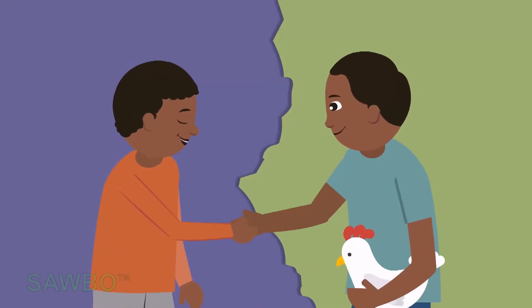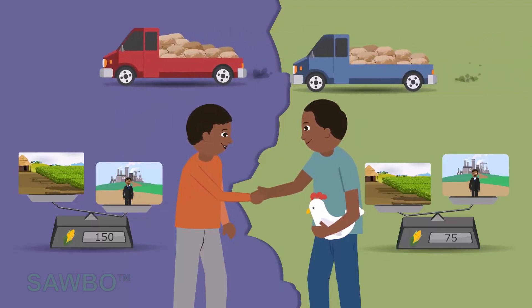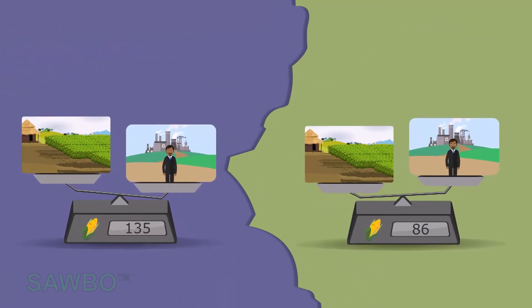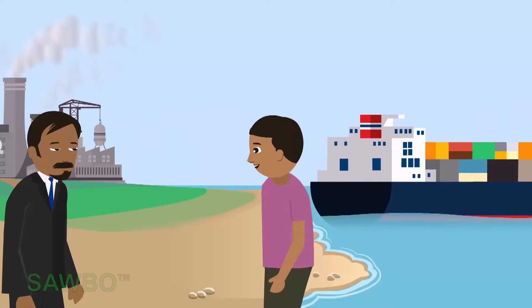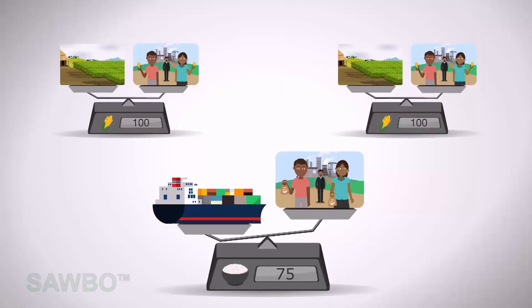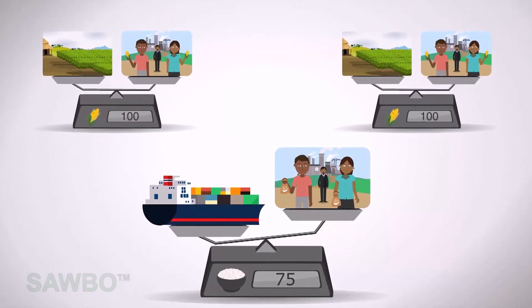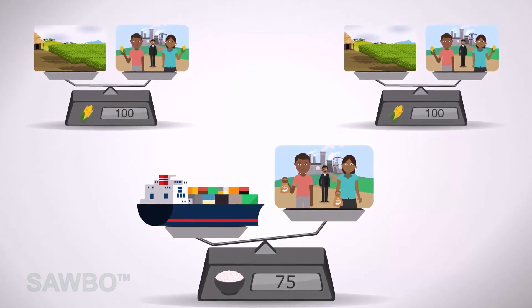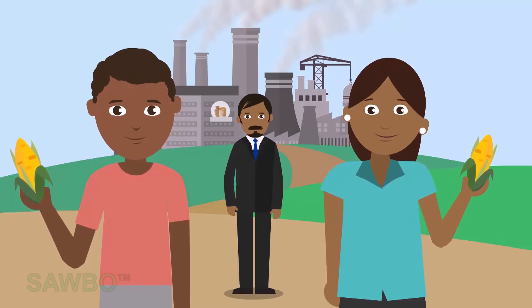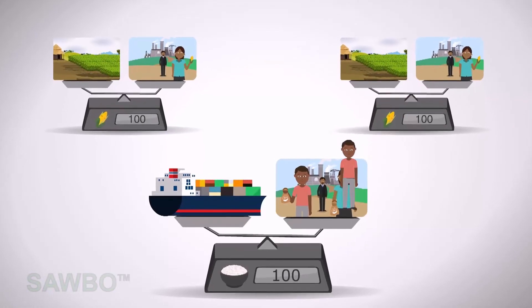A trader decides to buy cheap maize from a neighboring country and sell it in his own country. This extra supply of maize causes the price to level out between both countries. Now we notice that some rice traders come from overseas and offer rice to the local maize consumers, who are happy to buy the cheap rice because maize is expensive. Some maize consumers become rice consumers, causing less demand for maize because they now consume rice.